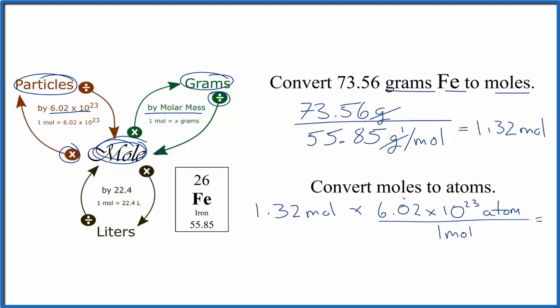When we do the math, we multiply the top, and then when we divide by the bottom, we cancel out moles. So we're left with atoms. That gives us 7.95 times 10 to the 23rd iron atoms.